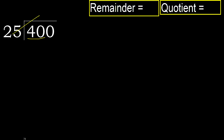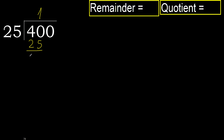25 multiplied by which number is nearest to 40 but not greater? 25 multiplied by 2 is 50, which is greater. Multiplied by 1 is 25, which is not greater. Subtract: 40 minus 25 equals 15.